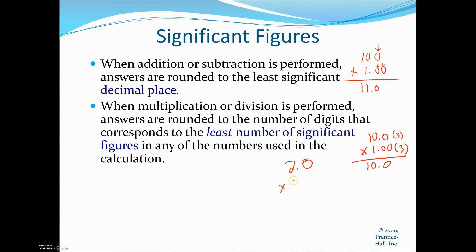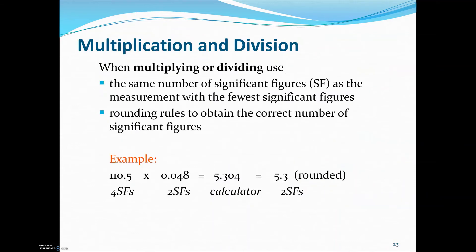Another multiplication example: if you have two sig figs times three sig figs, your final answer needs to be two significant figures. 10 times 2 is 20, so you'd write 20. with a decimal place to show two sig figs. The same rule applies to division. For addition and subtraction, always report to the least number of decimal places. For example, 110.5 times 0.048 — 110.5 is four sig figs, 0.048 is two sig figs. Your calculator gives 5.304, but your final answer rounded to two sig figs is 5.3.